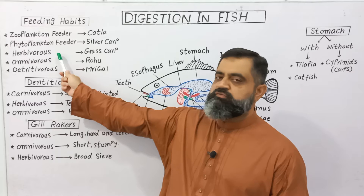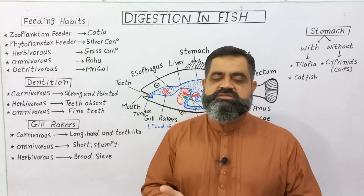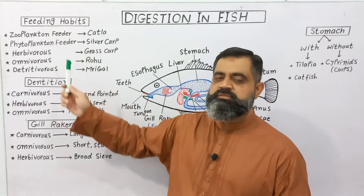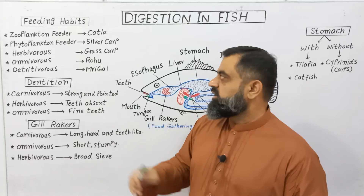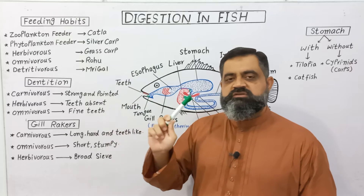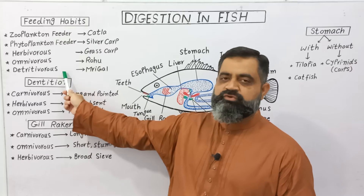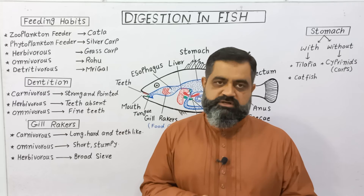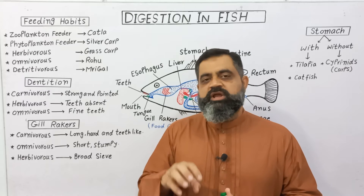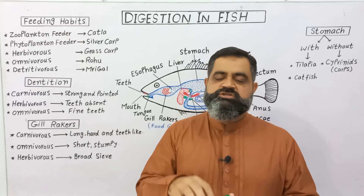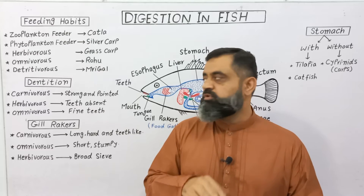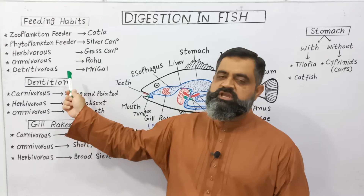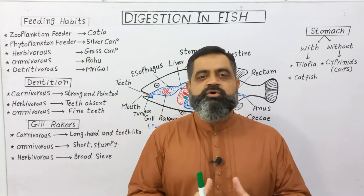Silver carp is an example of a phytoplankton feeder. Some fish are herbivorous, meaning they eat algae and sea grasses like kelp; grass carp is an example. Some fish are omnivorous, meaning they eat both plants and animals; Rohu is an example. Some fish are detritivorous, meaning they consume detritus from dead animals and plants, usually found at the bottom of the water. Rigol is an example.